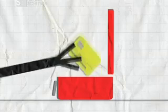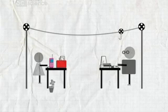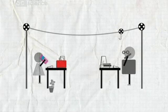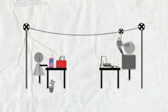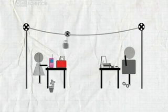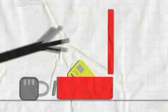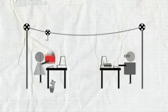The sender puts a message in a box like before. But this time, instead of locking it with her own padlock, she asks the person who will receive the message to buy a padlock and send it to her. When the sender gets the padlock, she uses it to lock the box, and then sends it.